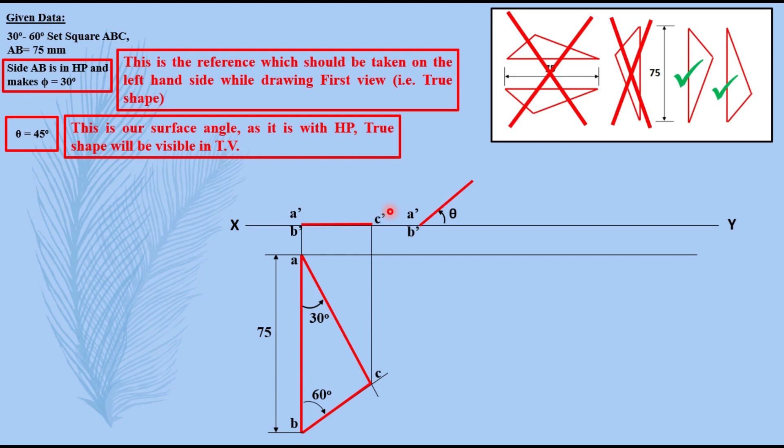Then you have to draw this front view again with the same dimension, naming it, taking the projectors down and from the top view. Intersections will give you the names: A and B are on this line, A is on this line here, B is on this line. So you get this point A1, B1, C1. Names have to be changed because the dimensions are changing. Joining them in the sequence completes the second top view.